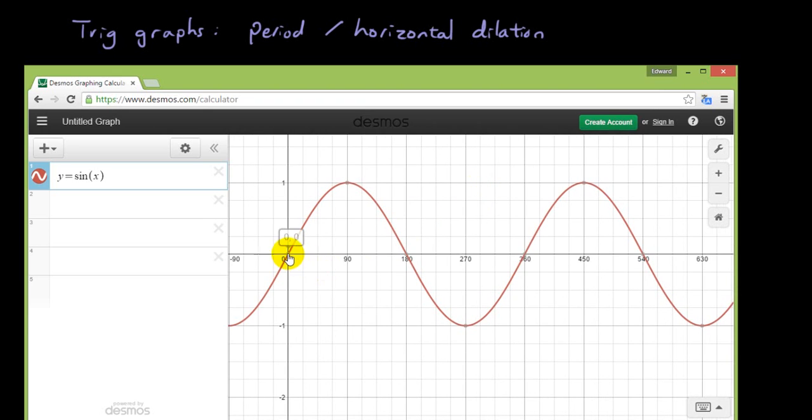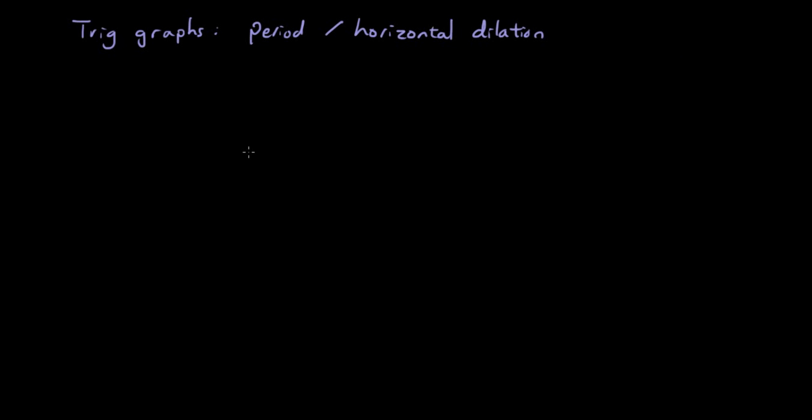So the period will be 360 because that's how long it takes before it starts repeating itself. The period of the curve y equals sine theta is equal to 360 degrees.